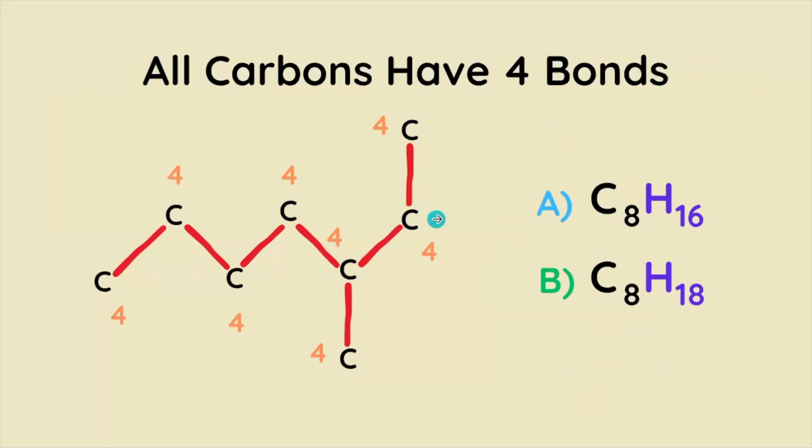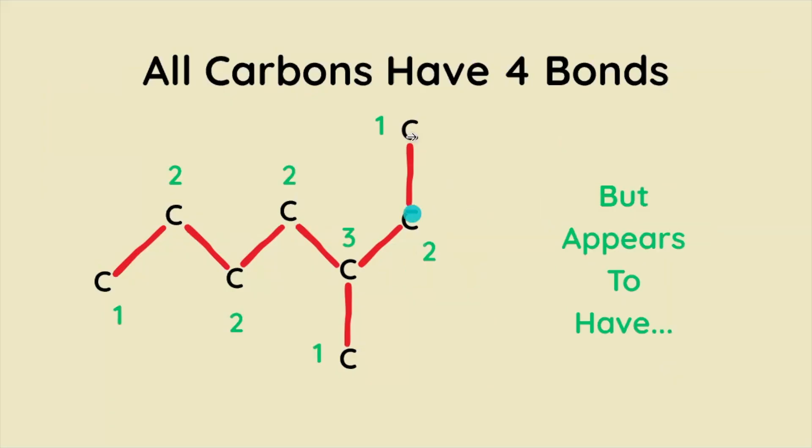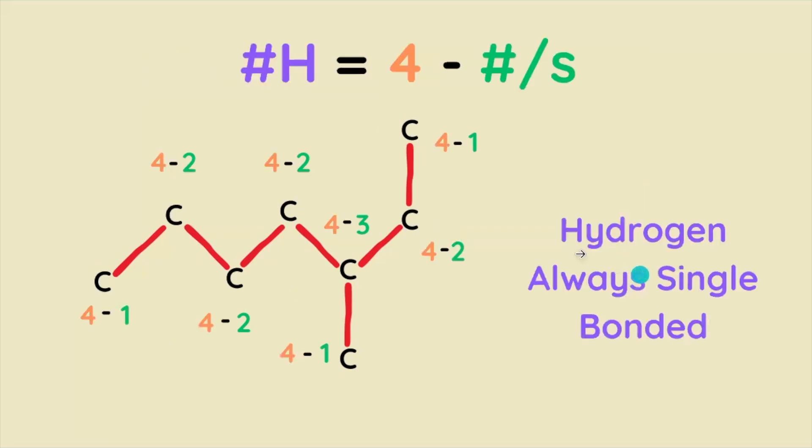Well to answer that we need to use our carbons so let's write them in and one thing that you must know about carbon is that it has 4 bonds total. But it looks like this carbon right here only has 1 bond and that this one only has 2. In fact none of these carbons appear to have 4 bonds. That's where the hydrogens come into play because the number of hydrogens each carbon has is simply what makes up the difference to give it 4 bonds total.